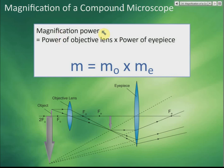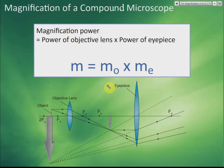Another thing you need to know is the magnification. The total magnification is M equals Mo times Me, where Mo is the magnification of the objective lens and Me is the magnification of the eyepiece. You can use this formula to find the overall magnification of the microscope.